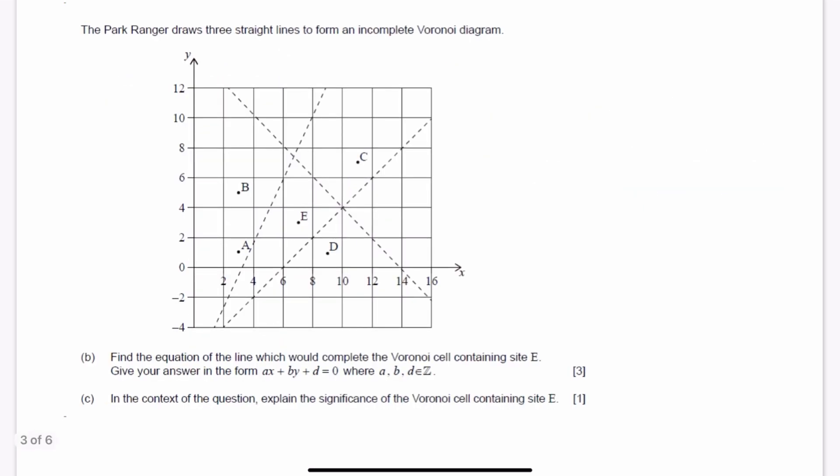The Park Ranger draws three straight lines to form an incomplete Voronoi diagram. Find the equation of the line which would complete the Voronoi cell containing site E. Give your answer in the form AX plus BY plus D equals 0 where A, B, D are integers. This is what we call standard form or general form. And in a previous video I told you the three requirements for general form which are that the X has to be positive, it has to be set equal to 0, and there can be no fractions or decimals. In order for us to find the equation of the line which would complete the Voronoi cell, we're going to have to go back and think about what these are.